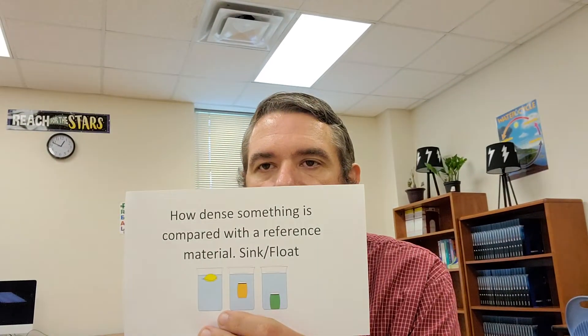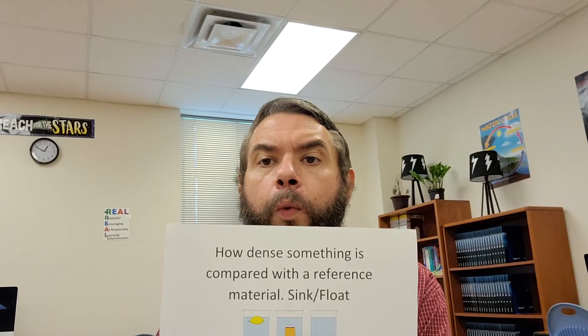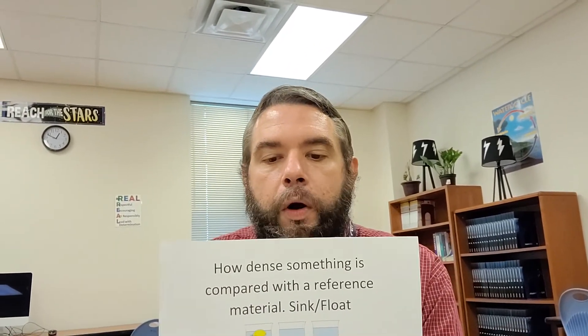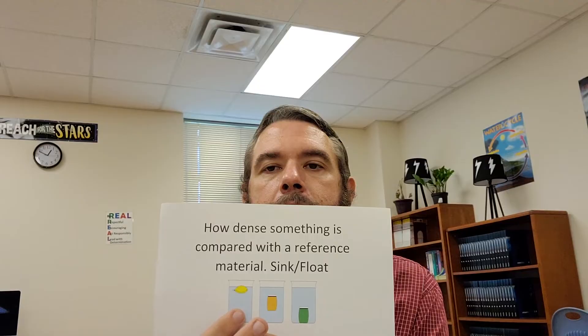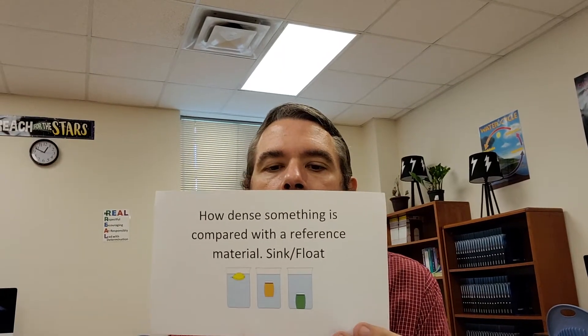Make sure you include that in your science journal. Today we're going to start with the physical property of relative density. Relative density is how dense something is compared with a reference material. The reference material we most often use is water. If an object is less dense than water it'll float; if it's equally as dense it'll stay in the middle; if it's more dense, it'll sink.